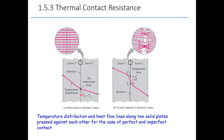But we still need to learn about the actual situation at the interface between layers. As you can see in figure B, it is for actual imperfect thermal contact. If we zoom in using microstructure tools, we can see an imperfect interface between these two layers.